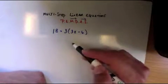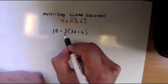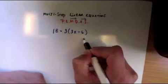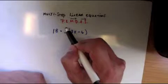Okay, so let's do an example. Now you notice here, the first thing I want to do - you notice there's a 3 next to the parenthesis - so the first thing you want to do is distribute.